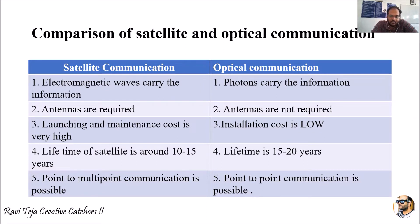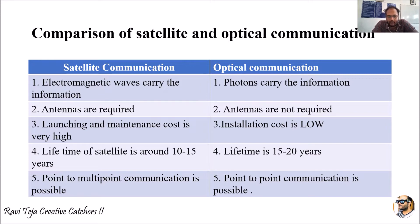In satellite communication, point-to-multipoint communication is possible. From a single satellite you can communicate with several earth stations present in particular areas or countries. In optical communication, it is a cable that uses photons or light to transmit information, so only point-to-point communication is possible.